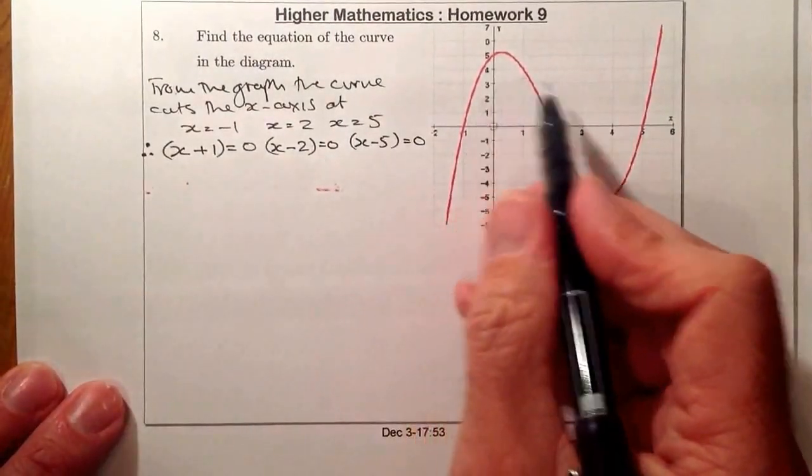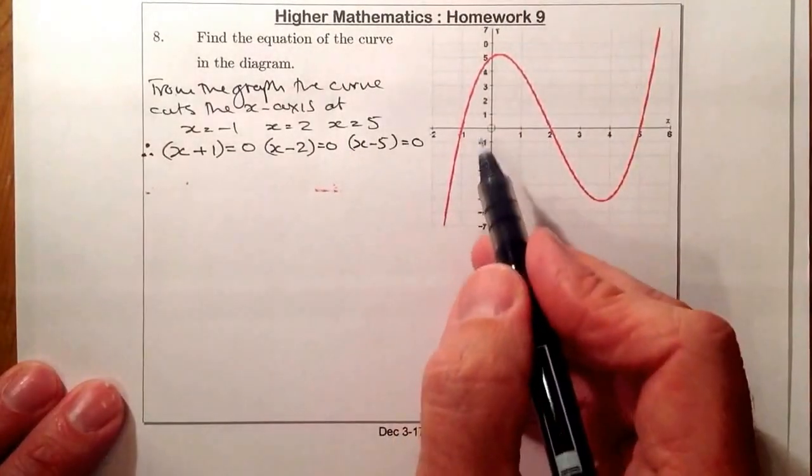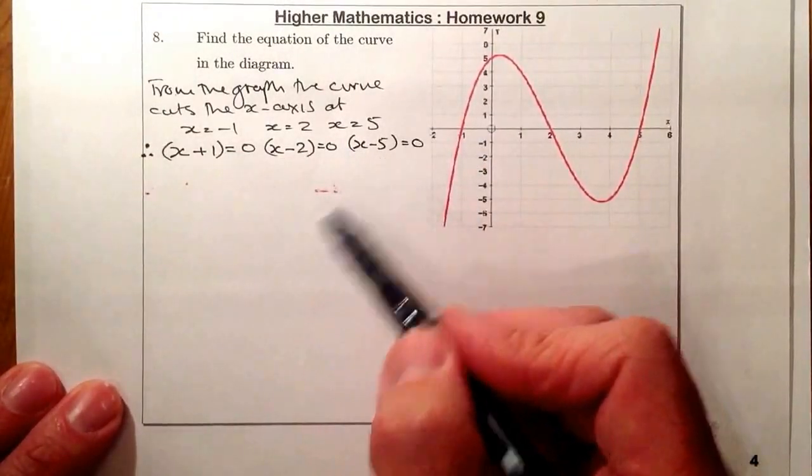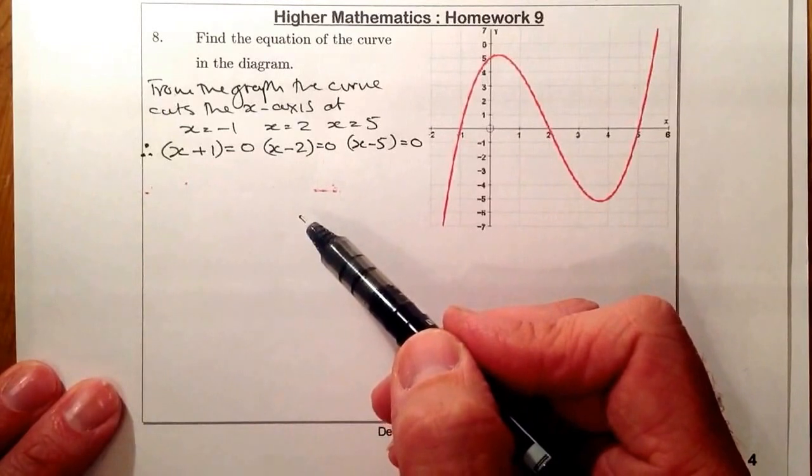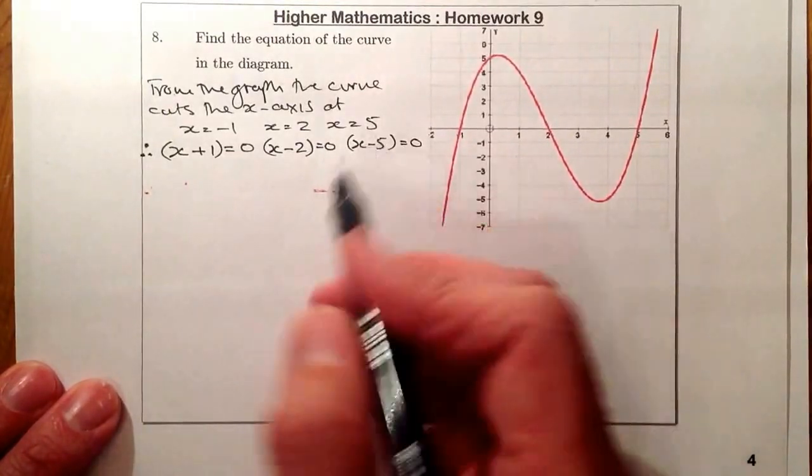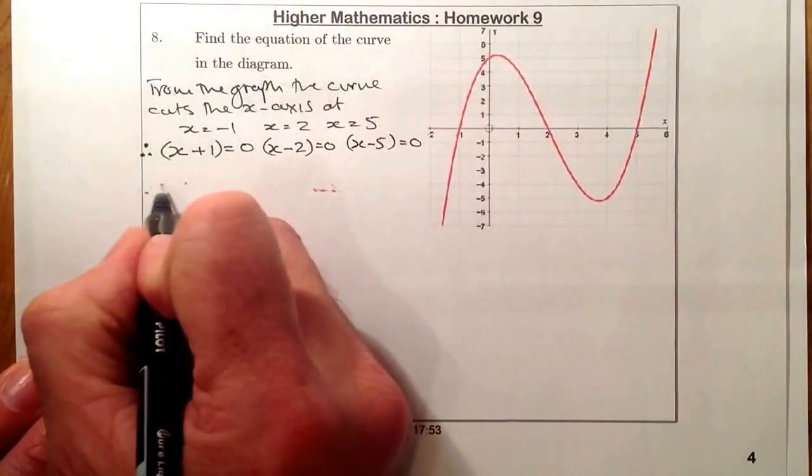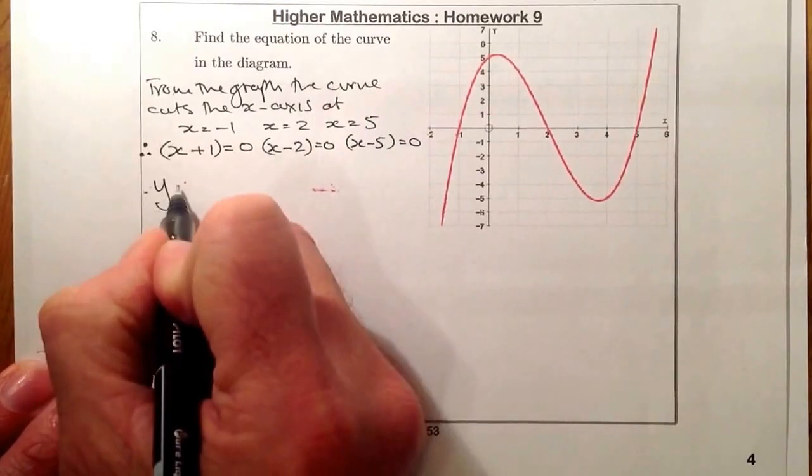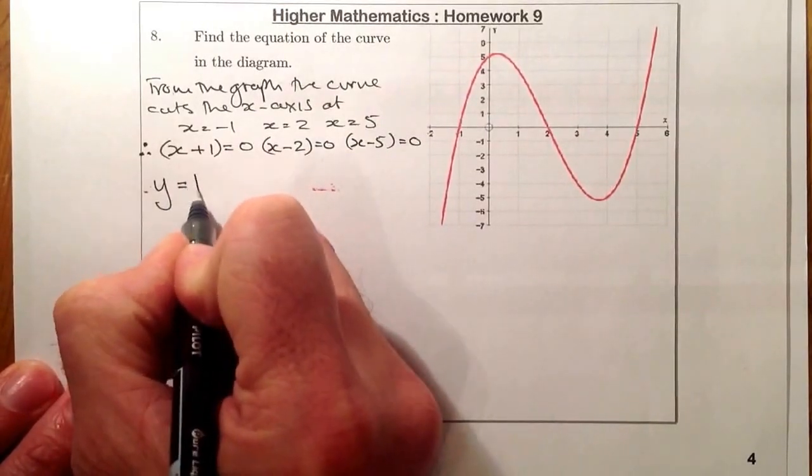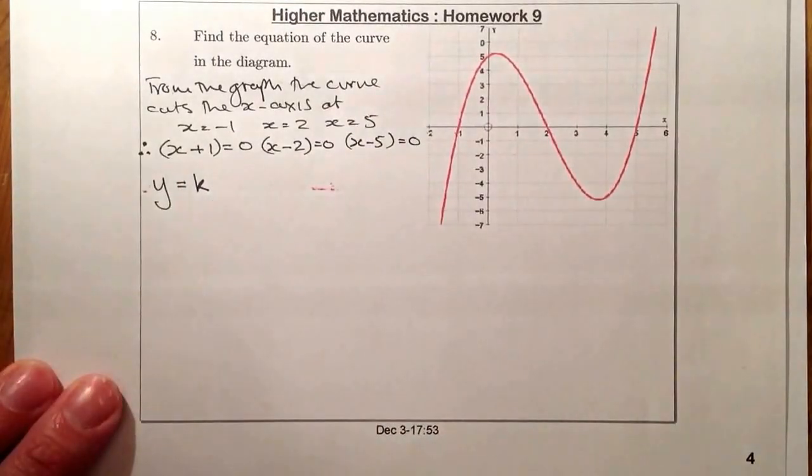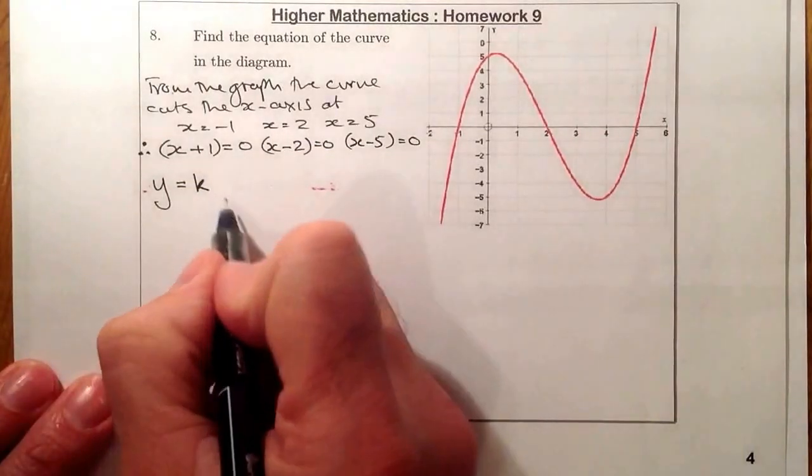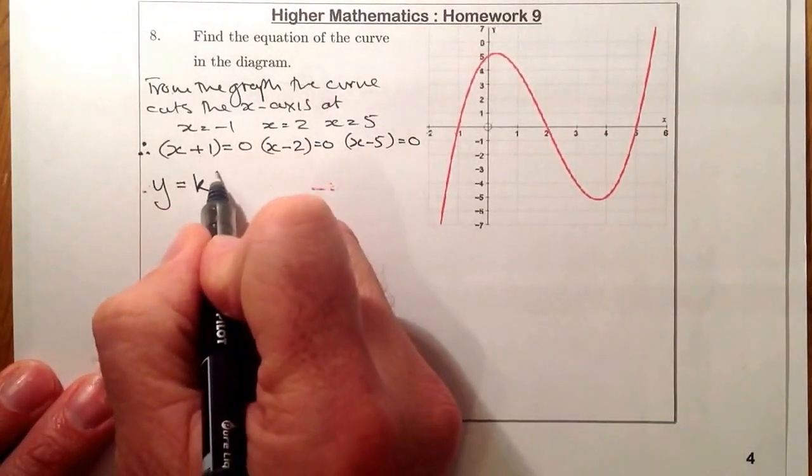So what I'm then going to do is set up the equation of the curve using the factors, but there's an important part that is often forgotten, that there's a value that I need to place in as well. So let me see how this is going to look. So y is equal to some number, I'm going to call it k, and that's going to be multiplied by each of the factors.